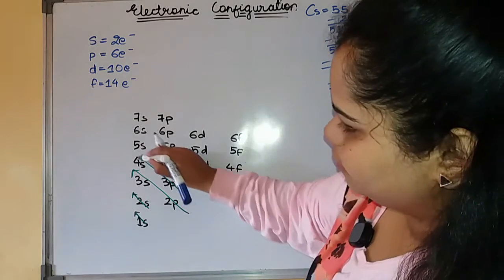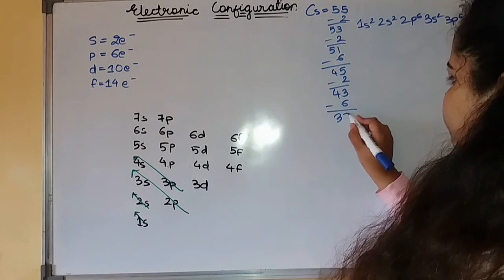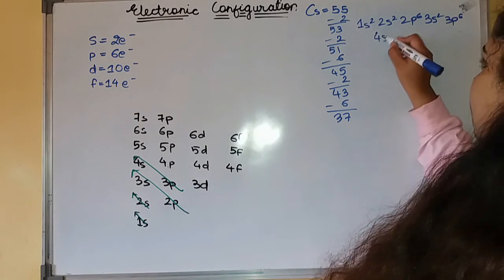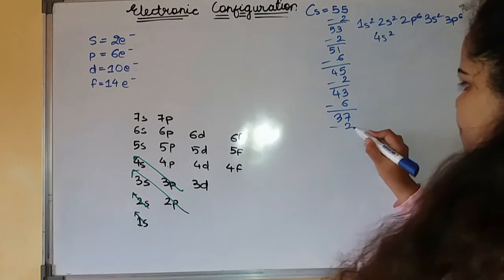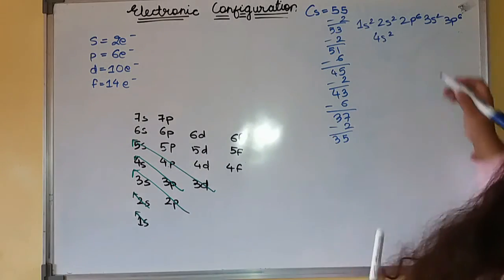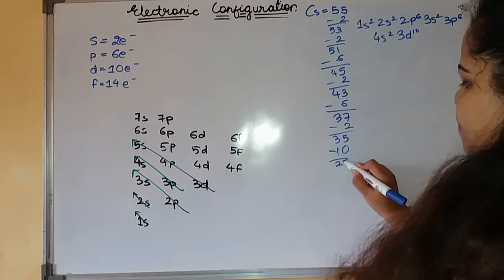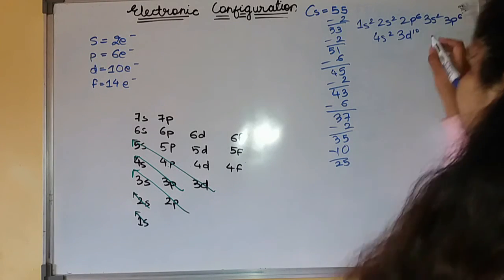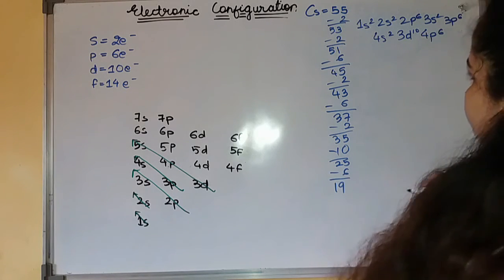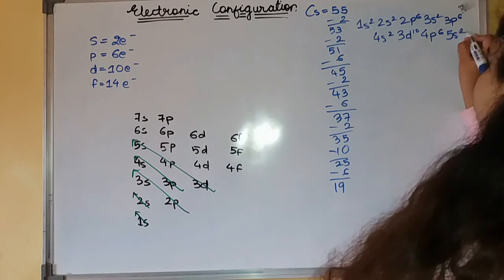3p and 4s incorporate 6 electrons, and 4s 2. 3d, 4p and 5s. 3d will incorporate 10. This becomes 25. 4p will incorporate 6. 5s will incorporate 2.